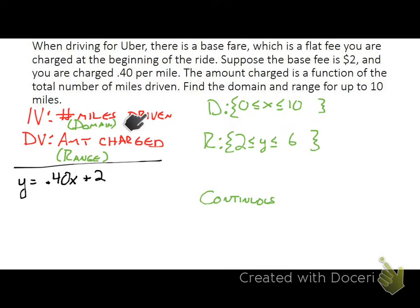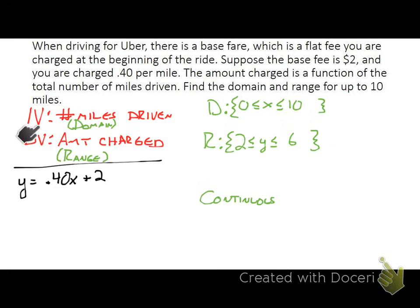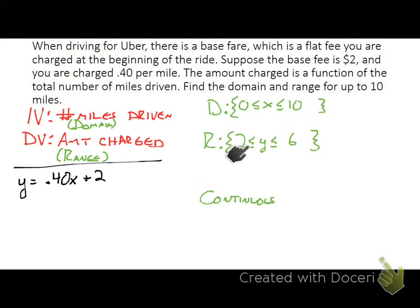To summarize: when you have a word problem, start by identifying your independent and dependent variables. Once you know those, the group of independent variables is called your domain, and the group of dependent values is your range. Reason through what values each can take, and write them appropriately — as a discrete set or using inequality notation — based on whether the relationship is discrete or continuous.